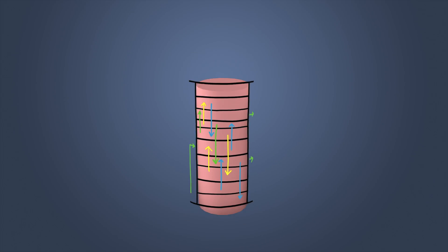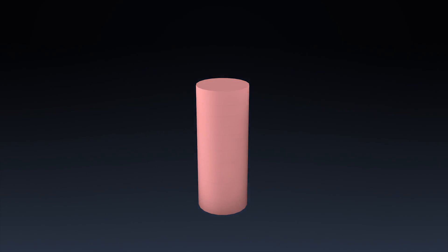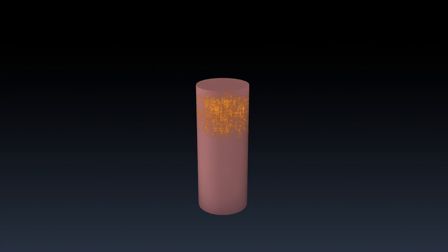Our goal at Numenta is to understand the function and operation of this complex circuit. What are the neurons doing? What are the layers doing? And how does the cortical column work?